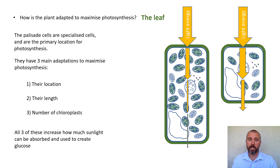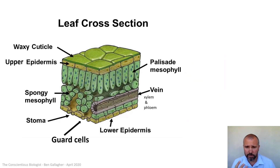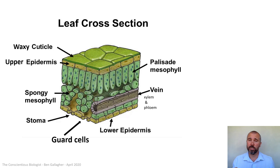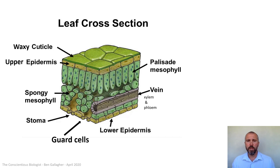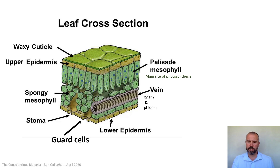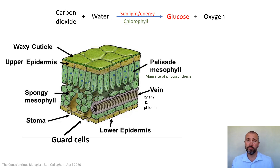All three adaptations increase how much sunlight can be absorbed and used to create glucose. Palisade cells are one of only two specialized cells you need to know — the other being root hair cells in the root; please review the osmosis presentation for details on those. On the leaf diagram, we can now confirm the palisade mesophyll is the main site of photosynthesis, and we can tick off sunlight and chlorophyll on the photosynthesis equation.